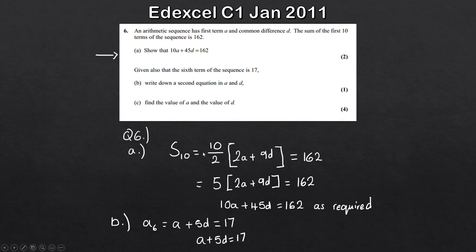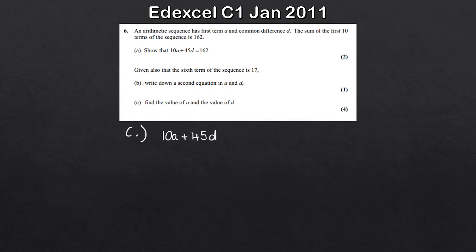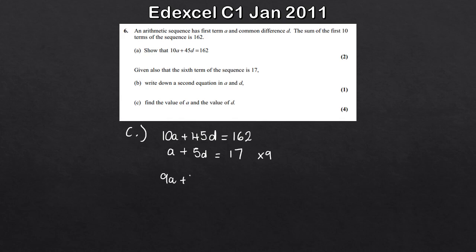For part C, we're asked to find the values of A and D by solving the two simultaneous equations. Writing them down: 10A plus 45D equals 162, and A plus 5D equals 70. To match the coefficients of D, I'll multiply the second equation by 9, giving 9A plus 45D equals 153.